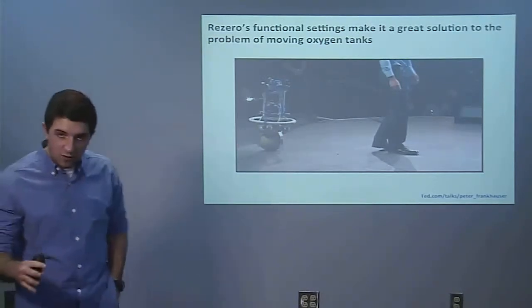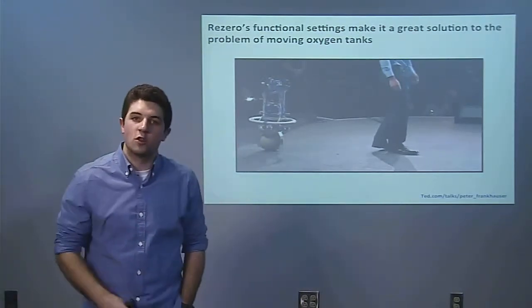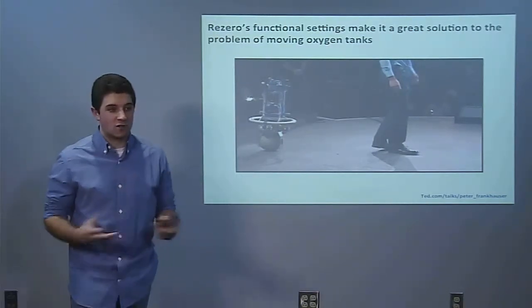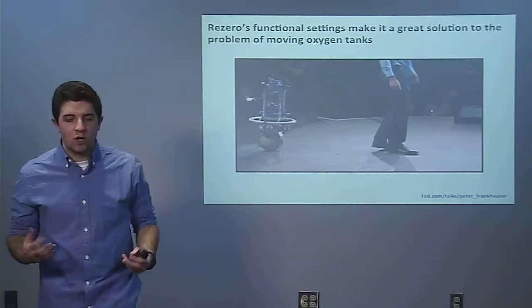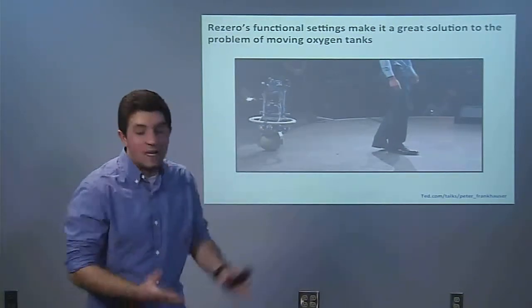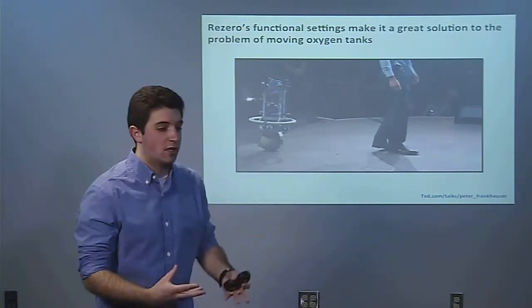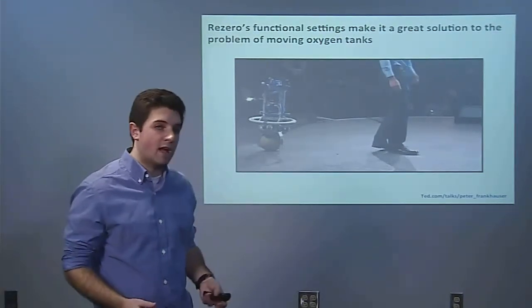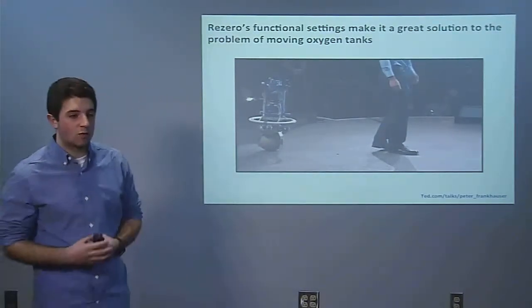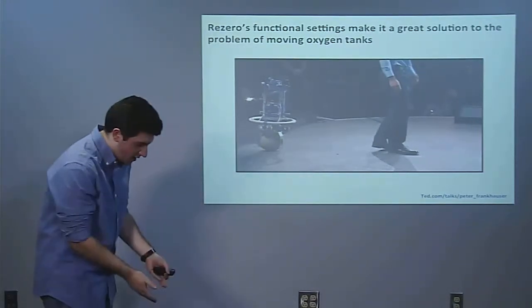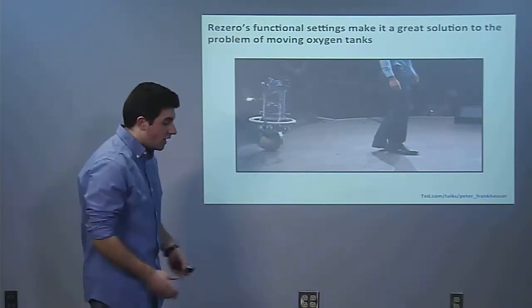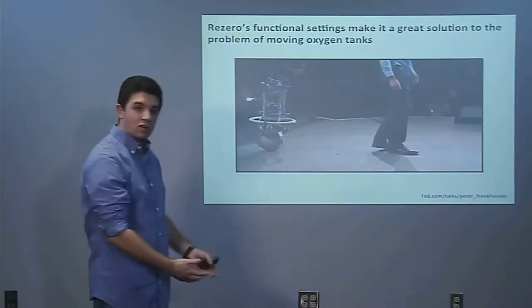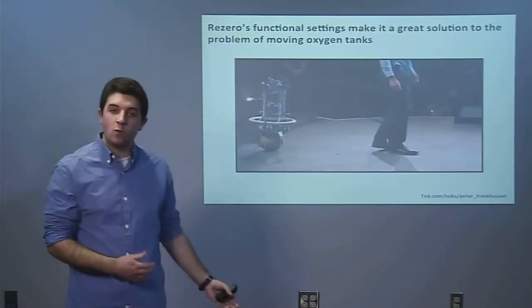But the multi-functionality is what's really important here. ReZero functions at four different modes. The first mode, not mentioned here, is a passive mode where me and you could have a catch with ReZero. I could push it, it would slide along, stop when you stopped it, and you could send it back to me. The other mode is where ReZero tries to maintain its position. So if it was standing here and I gave it a shove, it would go maybe a few yards, stop, and return to exactly where it was before I pushed it.